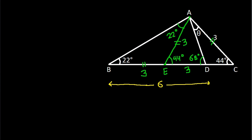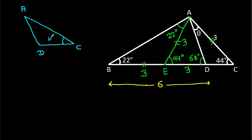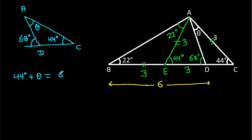Now in triangle ACD, this angle is 44 degrees, this angle is theta, and the exterior angle at D is 68 degrees. The exterior angle equals the sum of the two non-adjacent interior angles, so 44 degrees plus theta equals 68 degrees, giving theta equals 68 minus 44 equals 24 degrees.